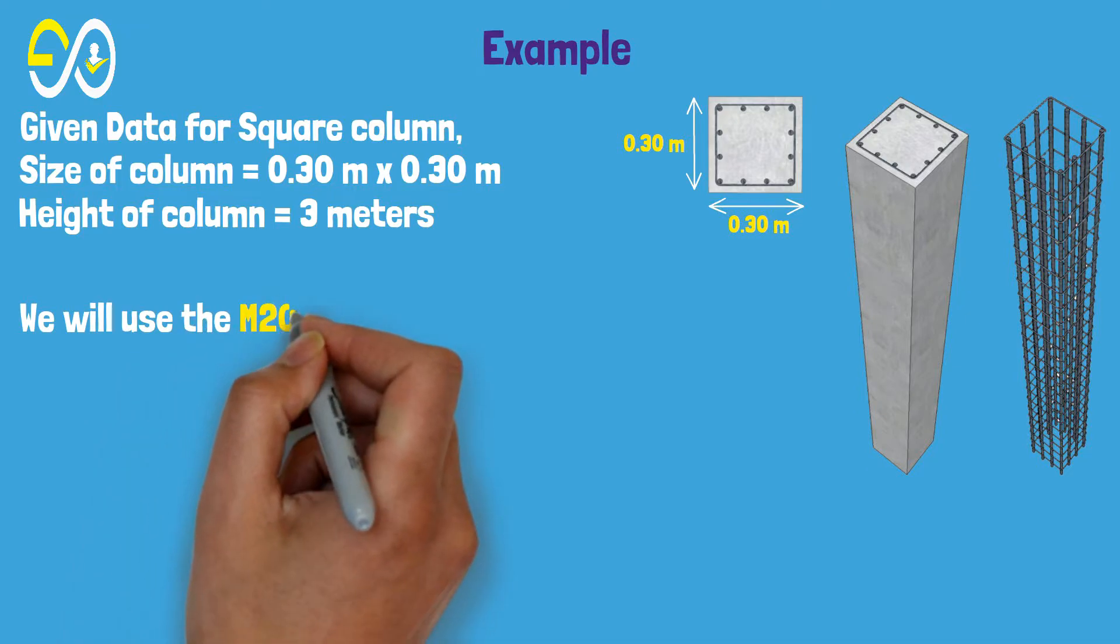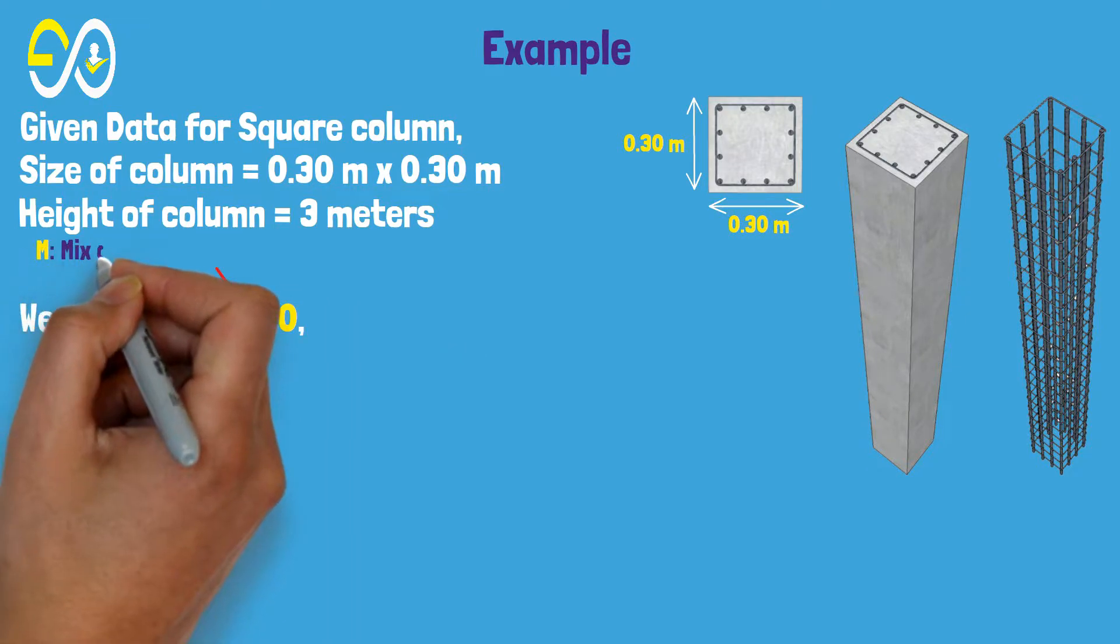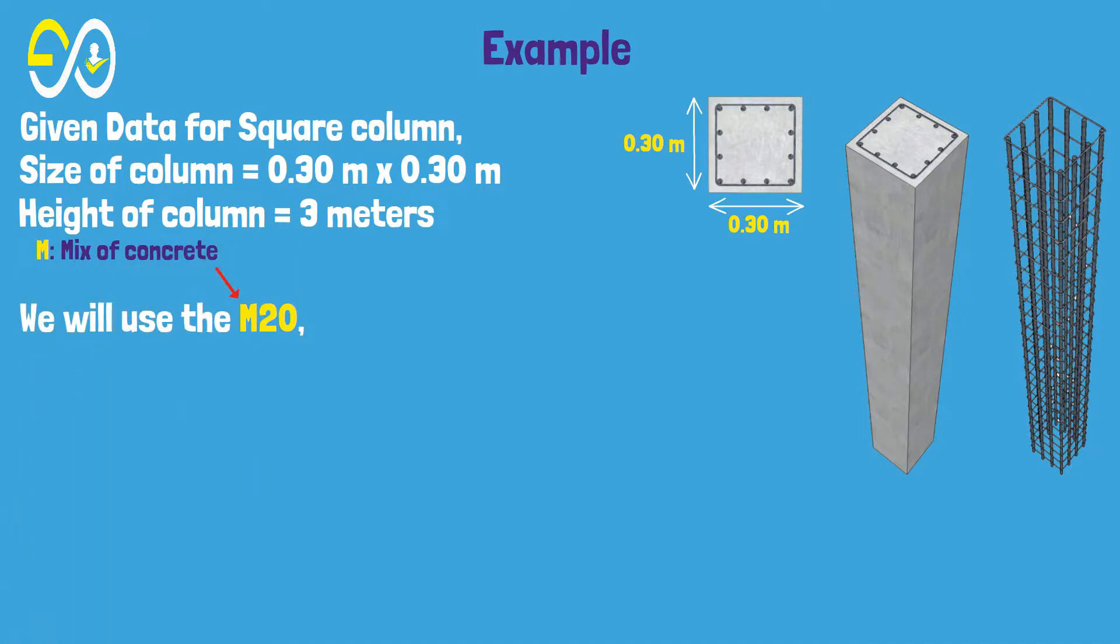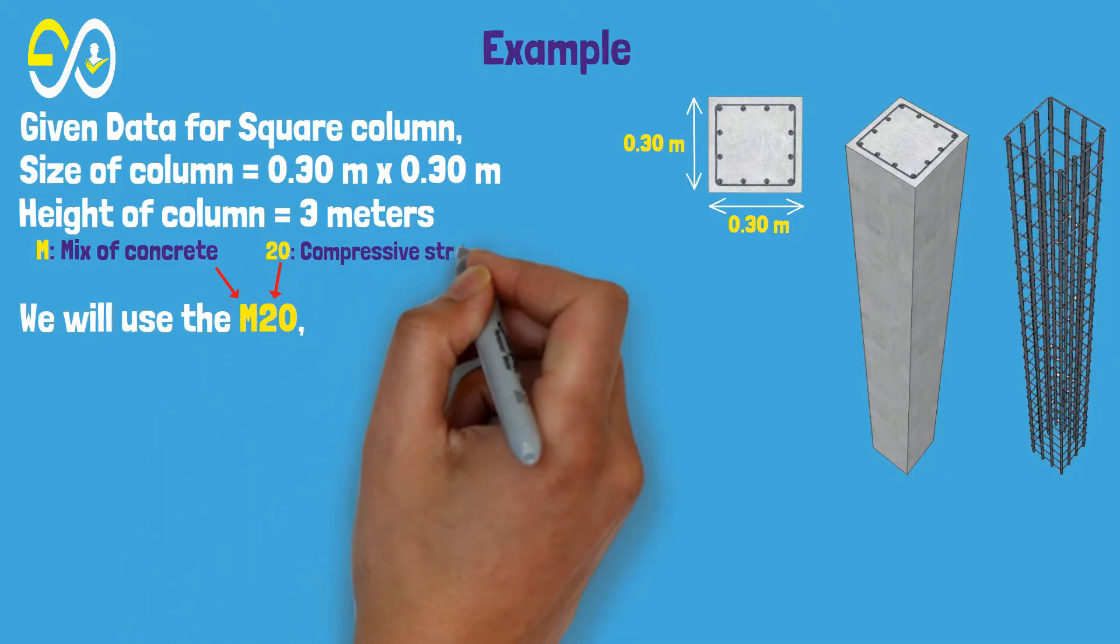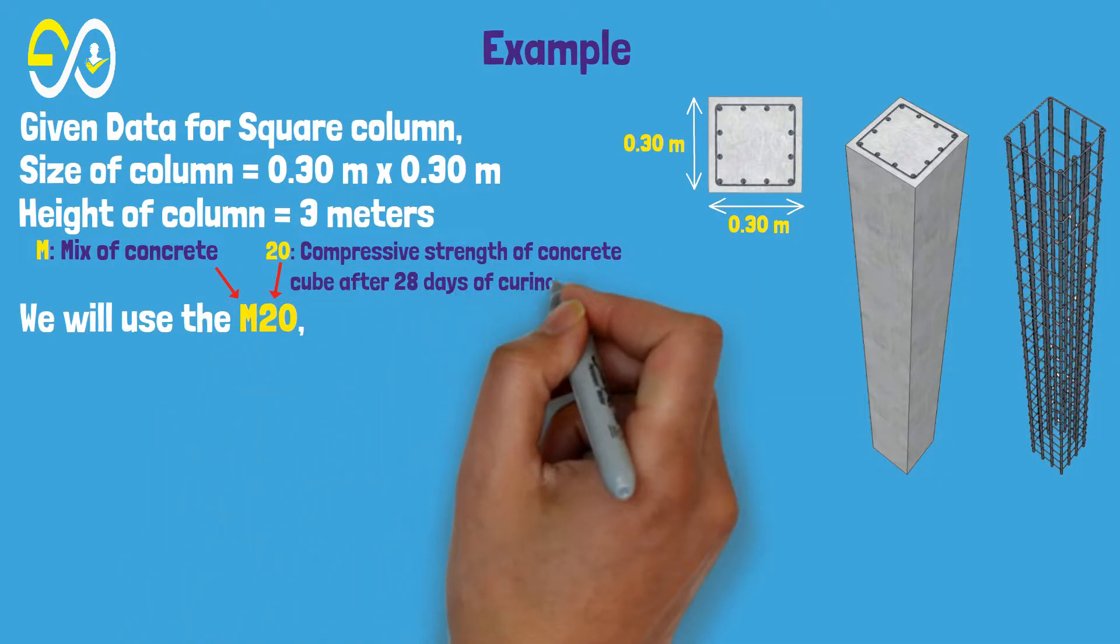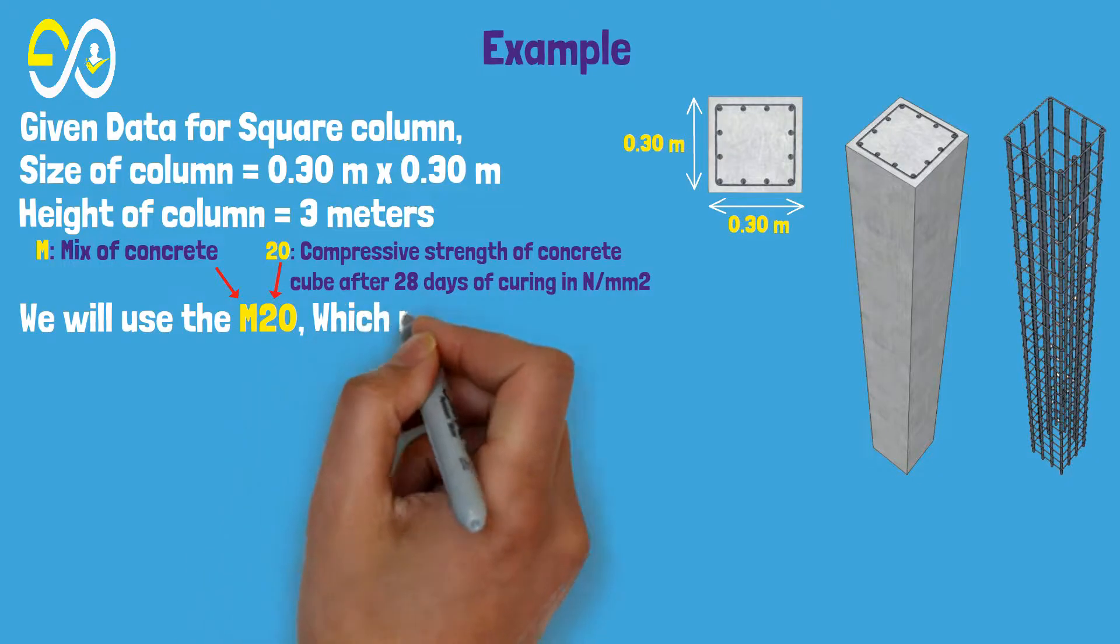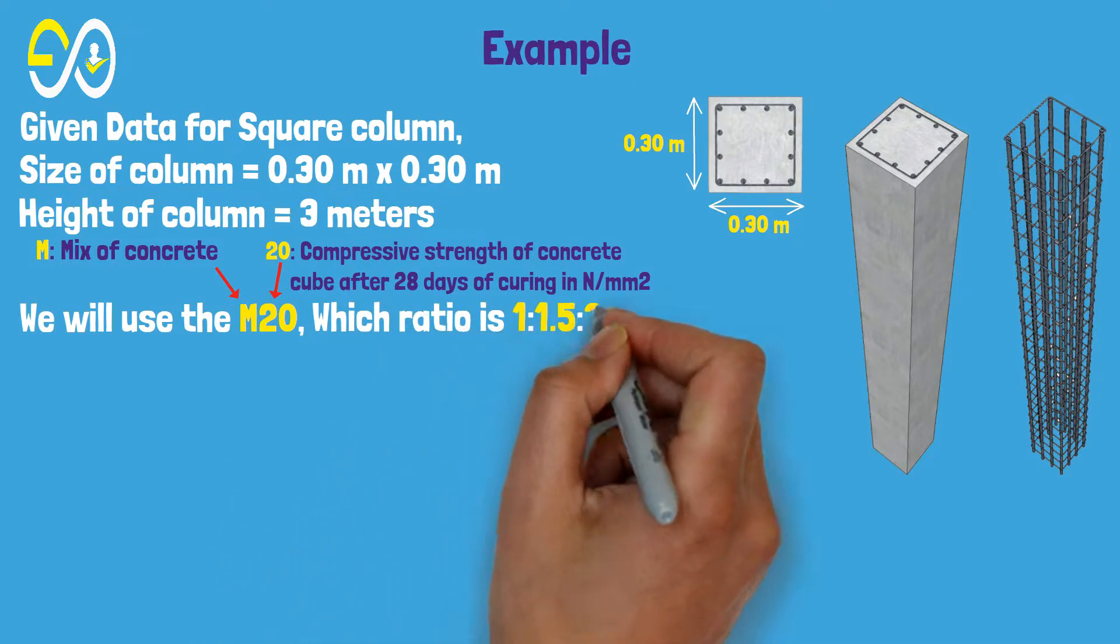We will use the M20 mix of concrete. M20 represents the compressive strength of the concrete cube after 28 days of curing in newtons per square millimeter. The ratio is 1:1.5:3.